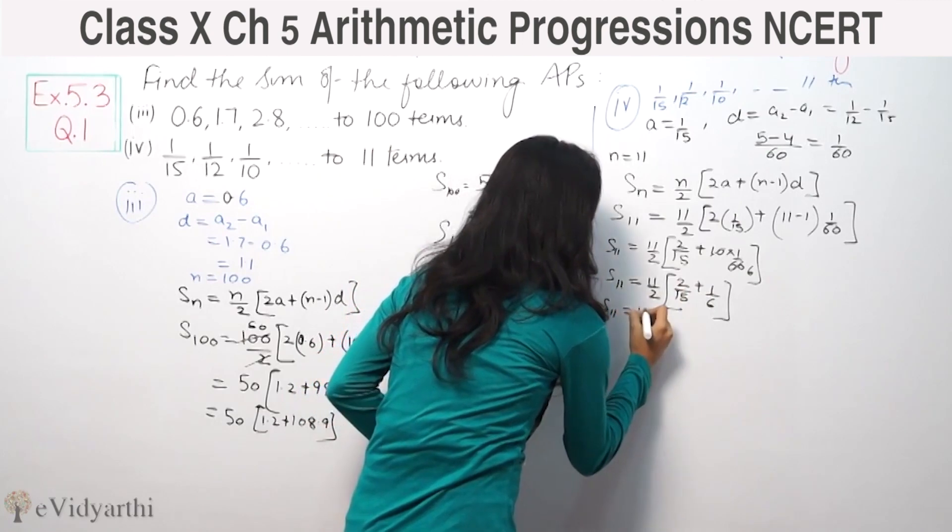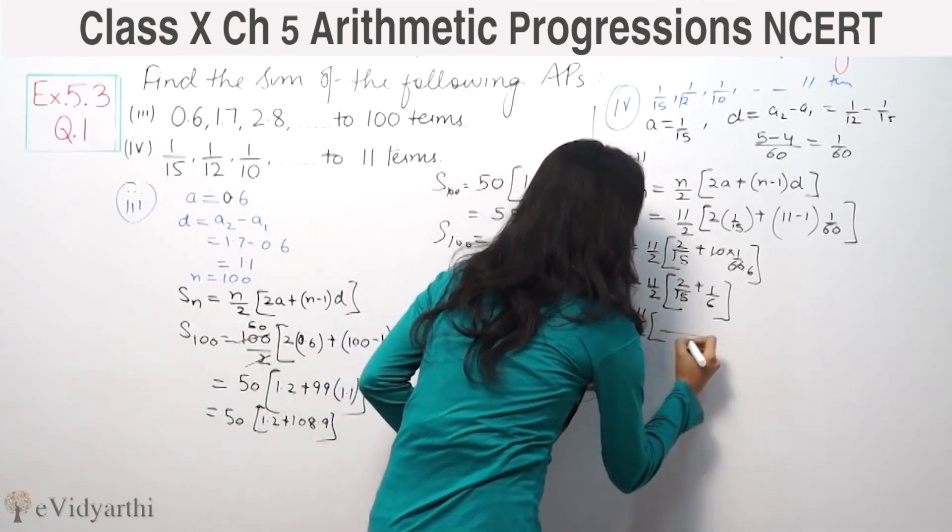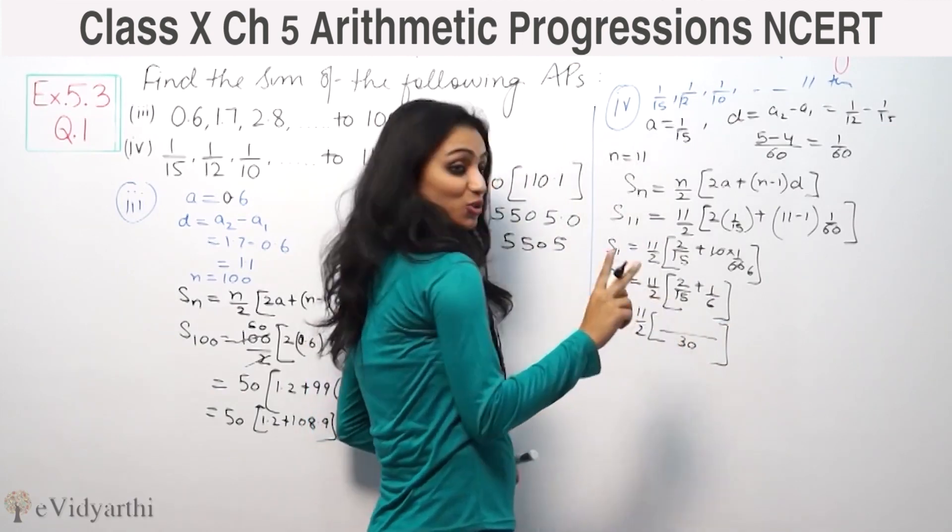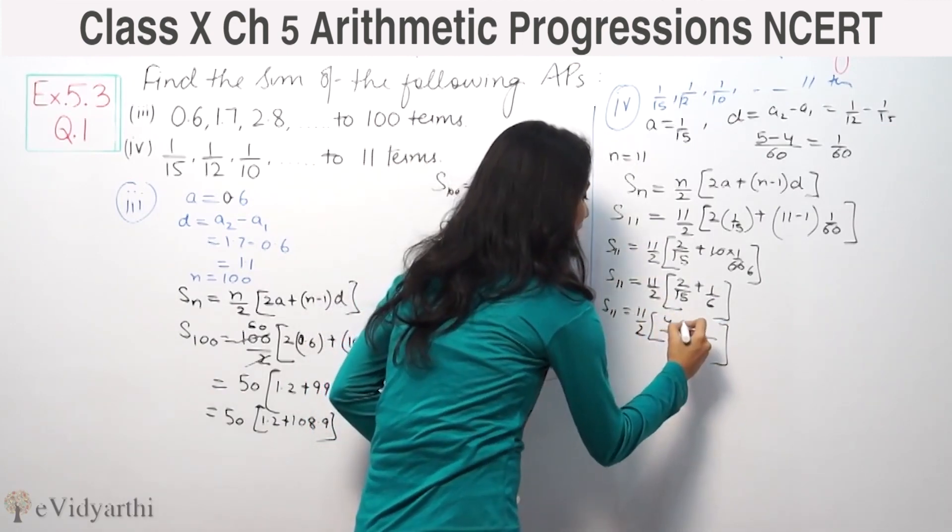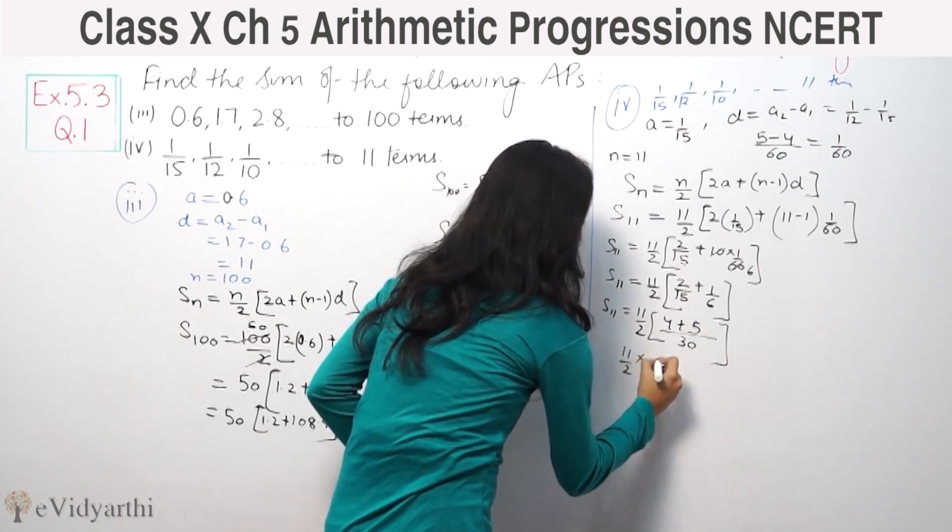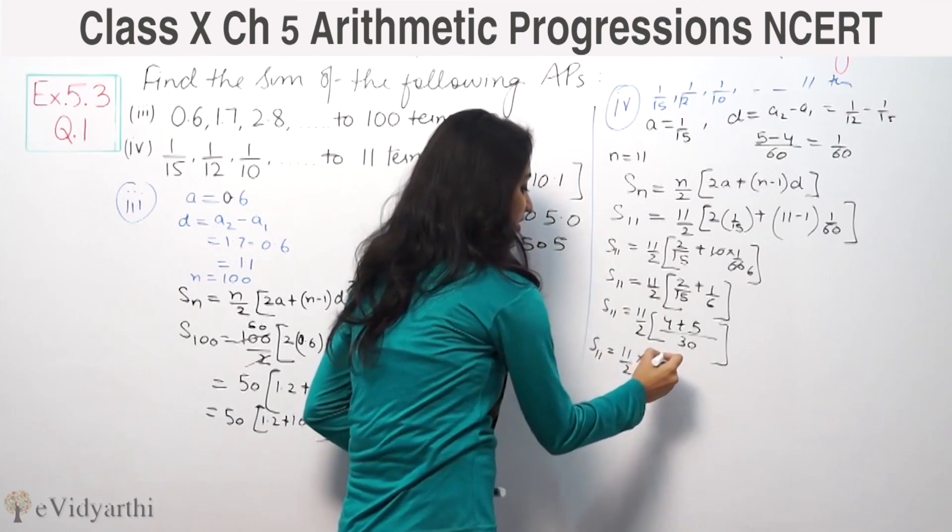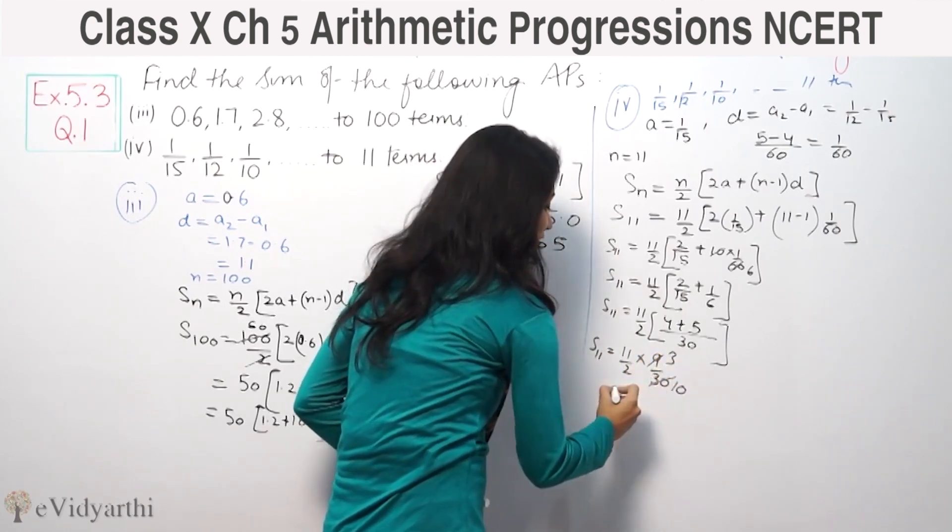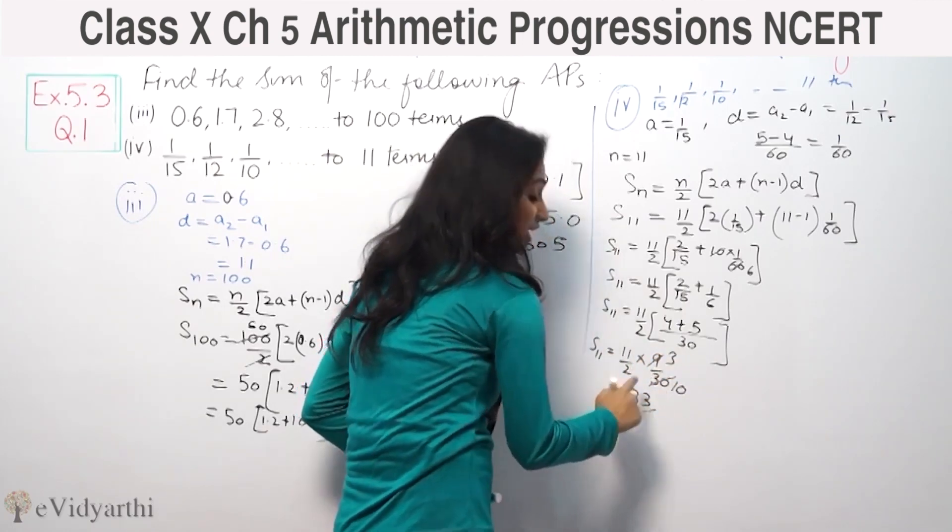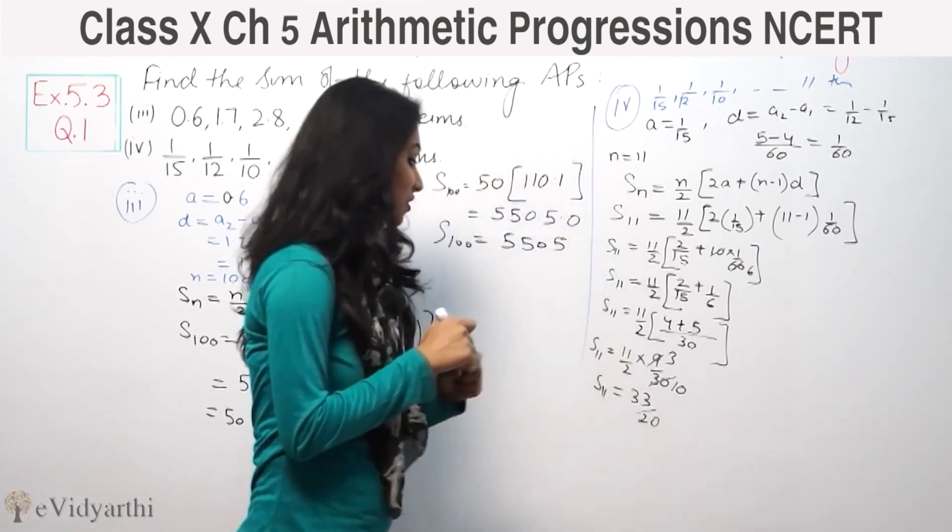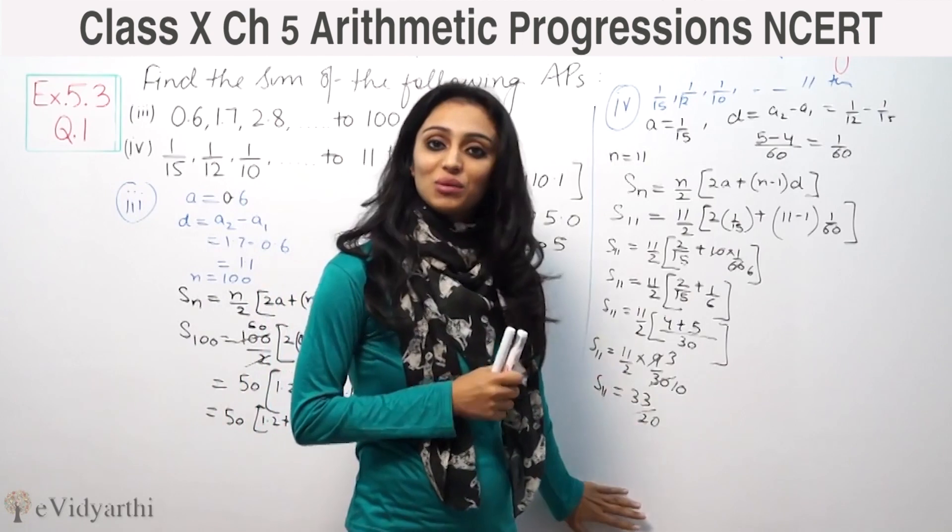2 by 15, the LCM is 30, so 4 plus 5 is 9. 11 by 2 into 9 by 30. 3 into 3 is 9, 11 into 3 is 33, 2 into 10 is 20. This is the sum of 11 terms: 33 by 20.